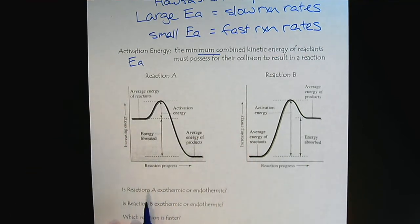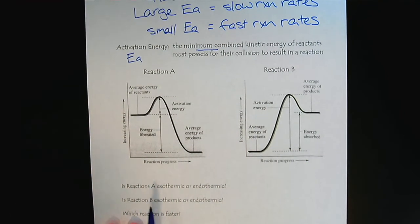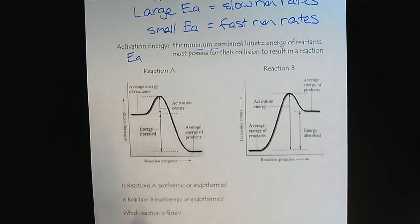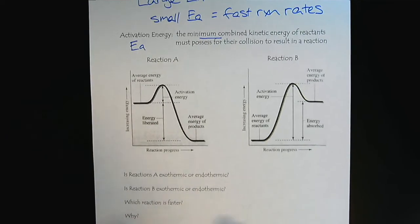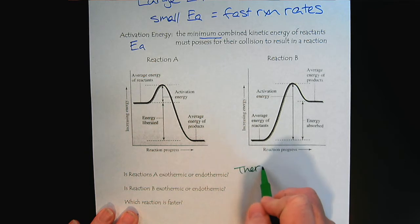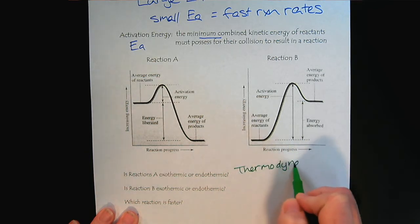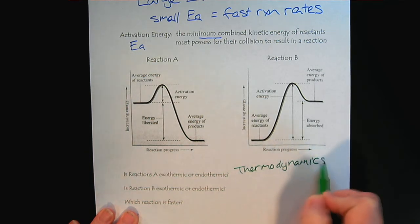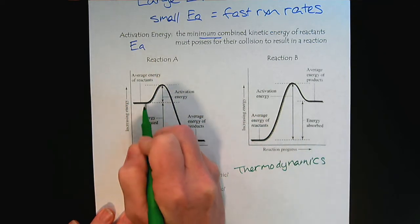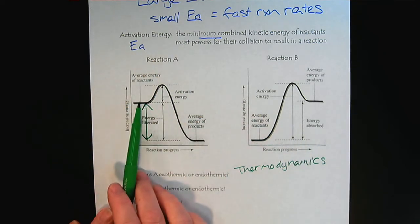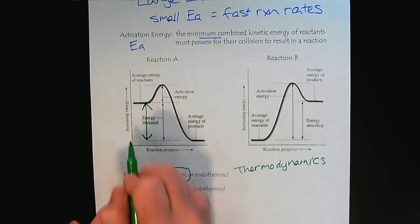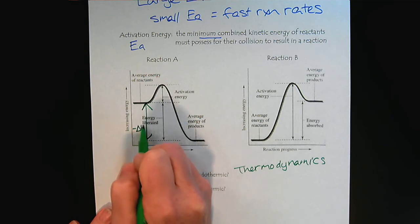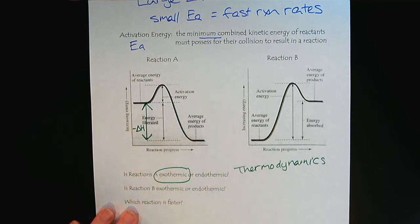Let's do a little review on thermodynamics. If we look at reaction A, is it endothermic or exothermic? We look for thermodynamics in the difference in energy between reactants and products. We would describe this as exothermic because heat is released, indicated by the lower energy of the products.